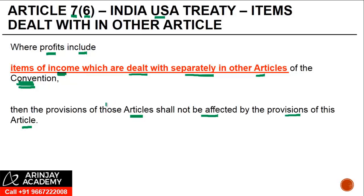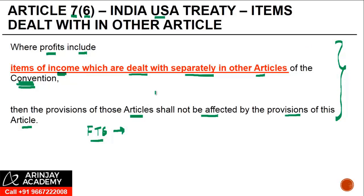Suppose there is a person who gets fee for technical services. The FTS clause in many treaties says that if the recipient has a PE in India and the FTS is effectively connected to that PE, then the provision of Article 7 will apply. What Paragraph 6 means in that case is that since that provision itself tells you to come back to Article 7, we will respect that — and therefore for FTS effectively connected to the PE, the taxation should be as per Article 7, provided the relevant FTS clause contains that assertion.